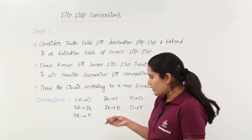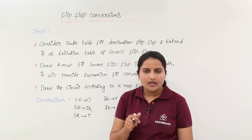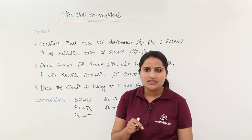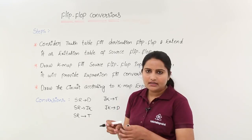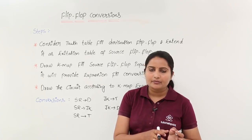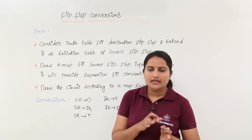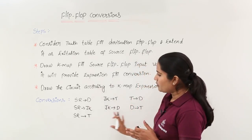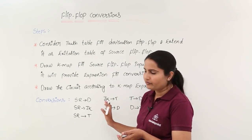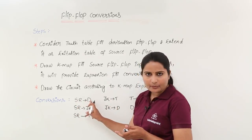The use of these conversions is: for example, if you have an SR flip-flop in hand but you want to use it like a JK flip-flop, then you need an additional circuitry — that is the need for conversion. If you want to make an SR flip-flop act as a JK flip-flop, you need to convert the SR into JK. These are the possible and basic conversions among the flip-flops. For example, if you are converting an SR flip-flop to a D flip-flop,